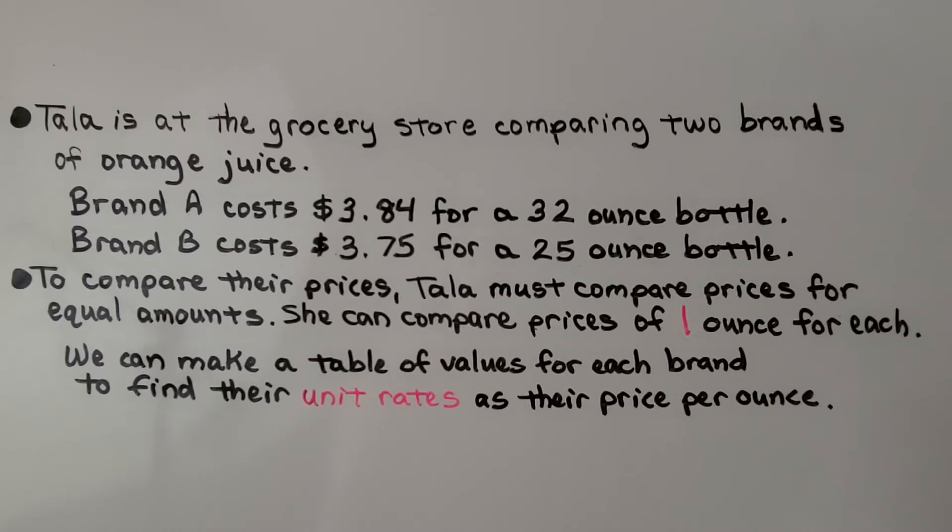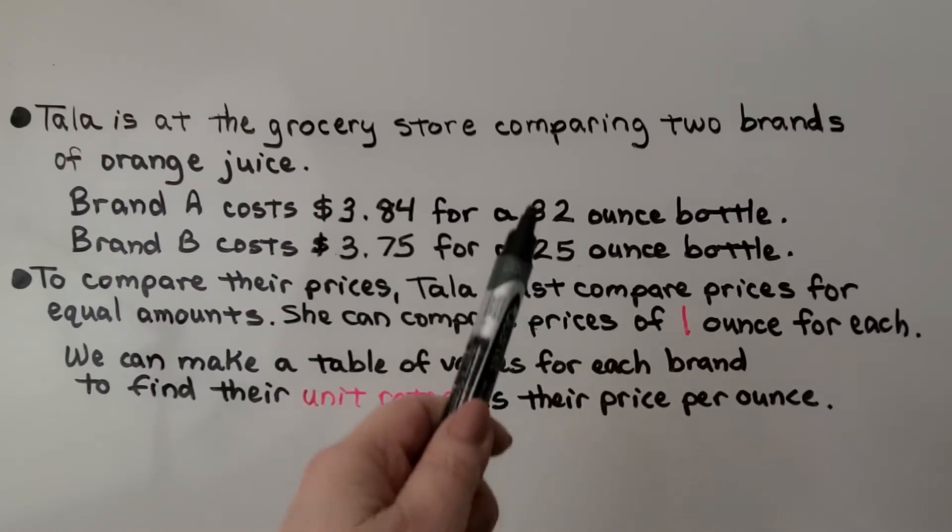Tal is at the grocery store comparing two brands of orange juice. Brand A costs $3.84 for a 32 ounce bottle, and Brand B costs $3.75 for a 25 ounce bottle. Just looking at this, you'd think this is a lesser price, so this might be the better deal. But look at the ounces.